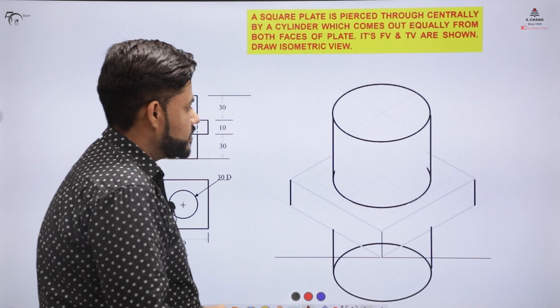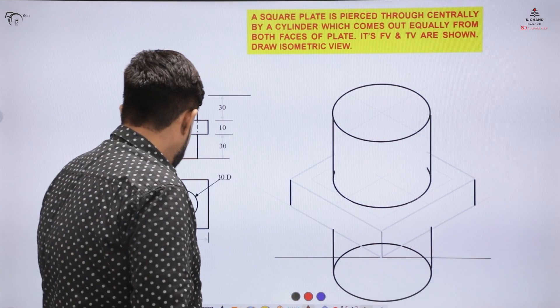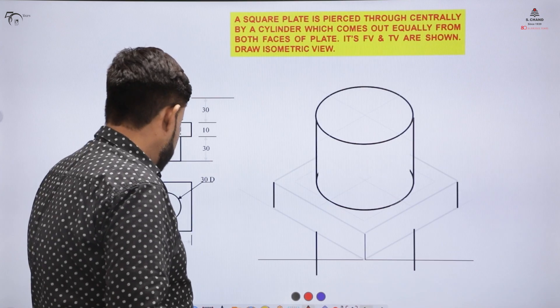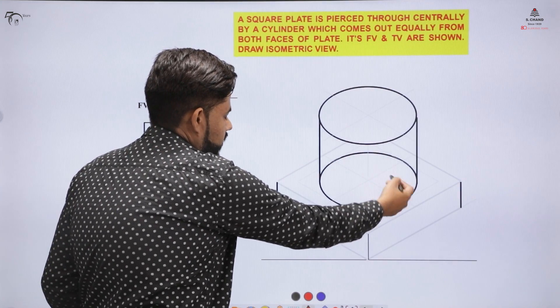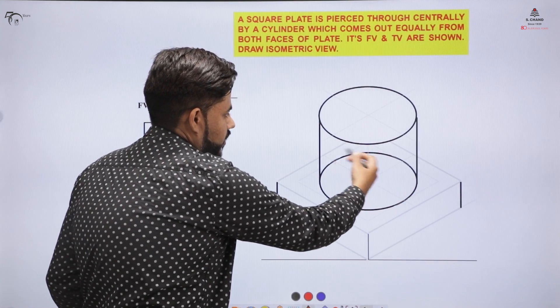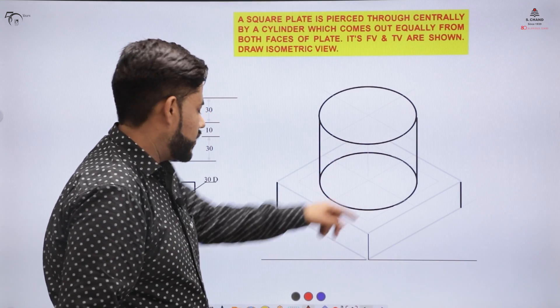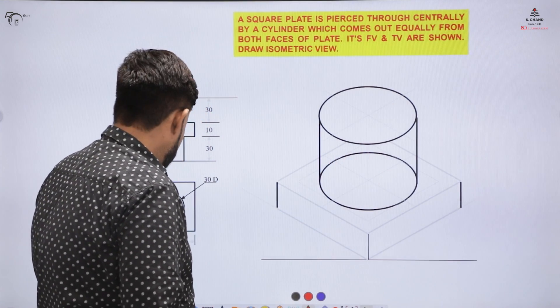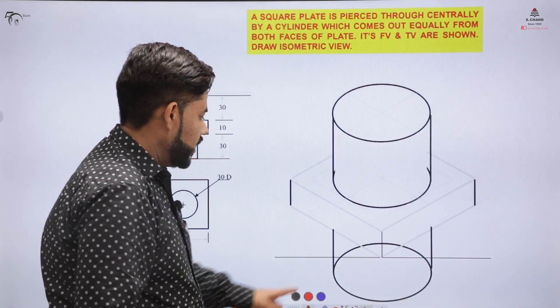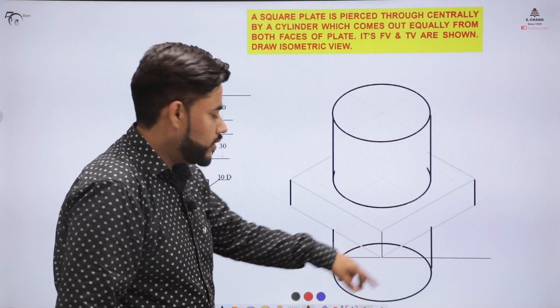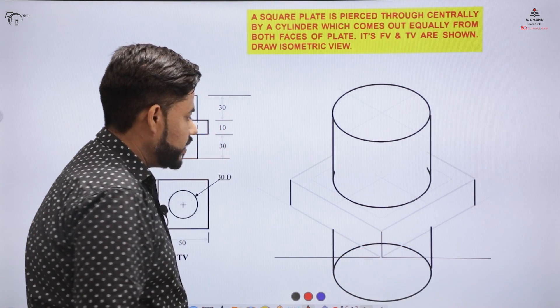Now some of the edges would be hidden. In order to indicate those hidden edges I just need to rub this or I can make it hidden with the help of the dotted lines. This can be removed or made hidden and this part also can be removed or erased with the help of the eraser.